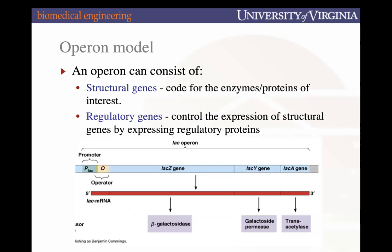Within this operon, there are structural genes that promote expression of the enzyme or protein of interest, achieving the function of the operon. There are also regulatory genes that control expression of the structural genes. These regulatory genes encode for a regulatory protein that acts back on the operon to regulate structural gene expression. Some regulatory genes lie just outside the operon, under their own promoter.